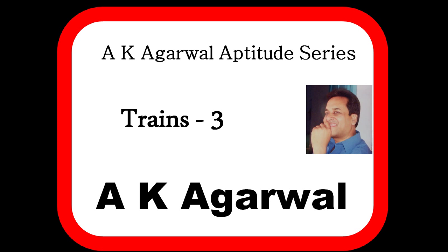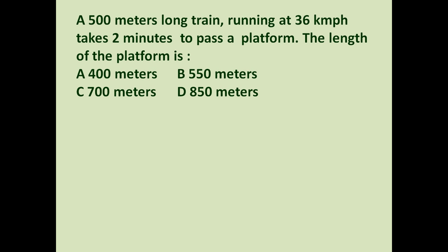Hello friends and welcome to AK Agarwal Aptitude Series. In this session we are going to learn a technique for solving a problem on trains. The given problem is: a 500-meter long train running at 36 kilometers per hour takes two minutes to pass a platform. The length of the platform is 400, 550, 700, or 850 meters — four options are given.